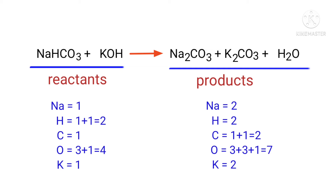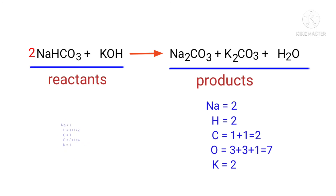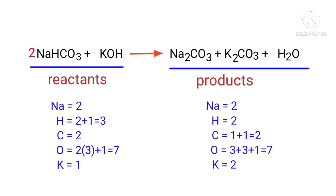In this equation we need to balance the sodium atoms first. To do this we need to put a coefficient of 2 in front of NaHCO₃. The sodium atoms are now balanced.